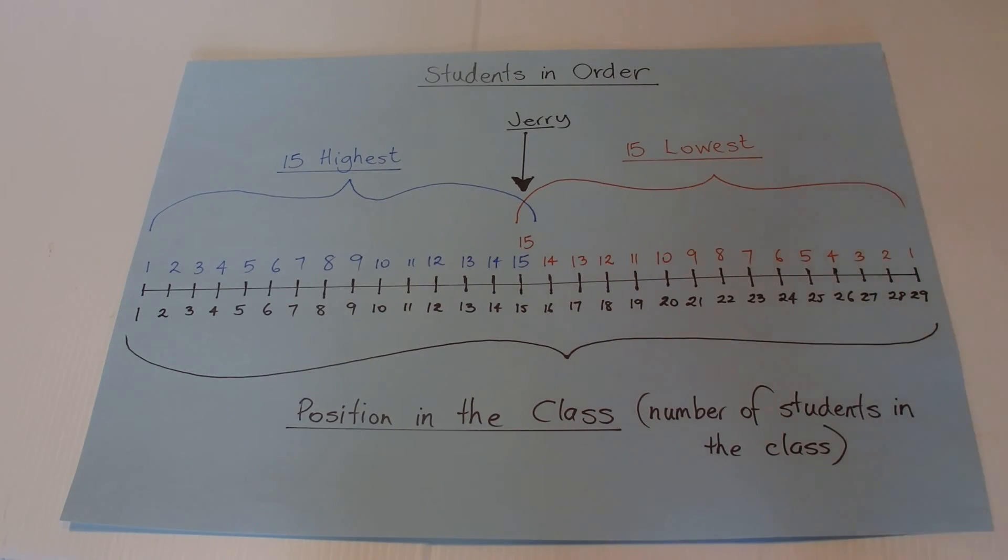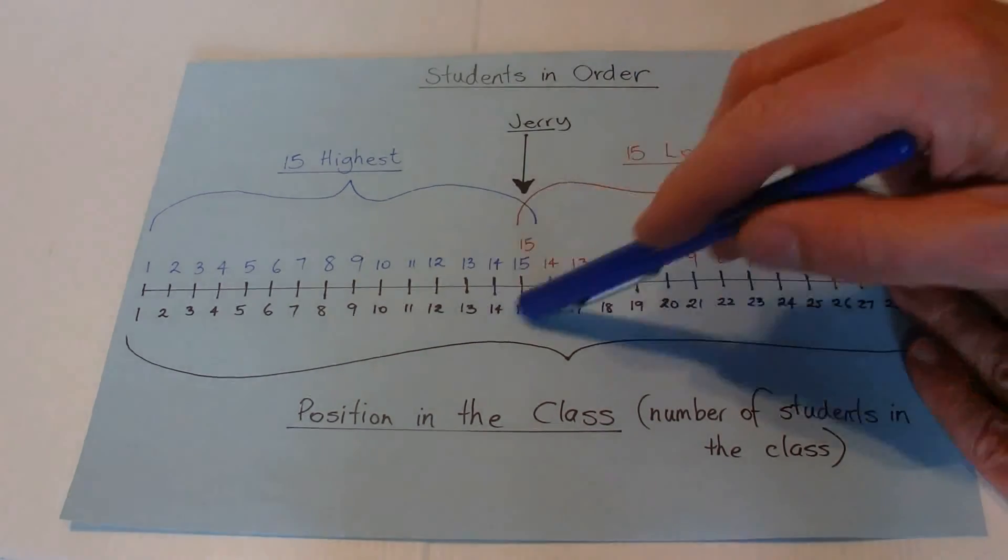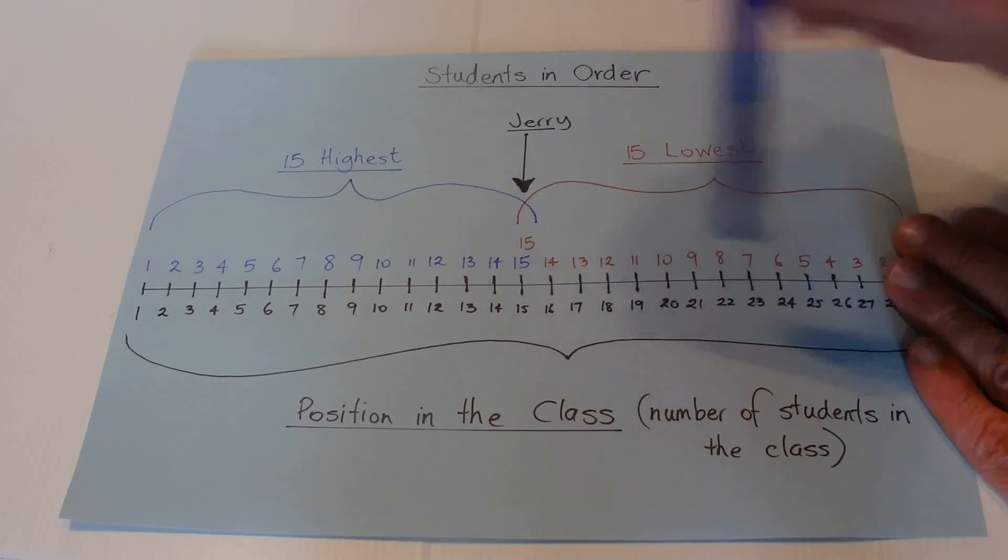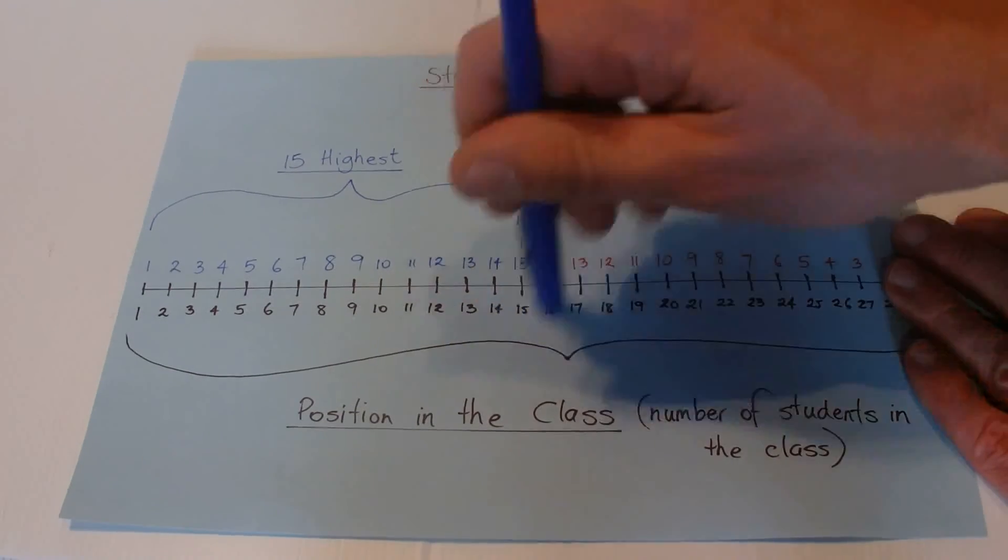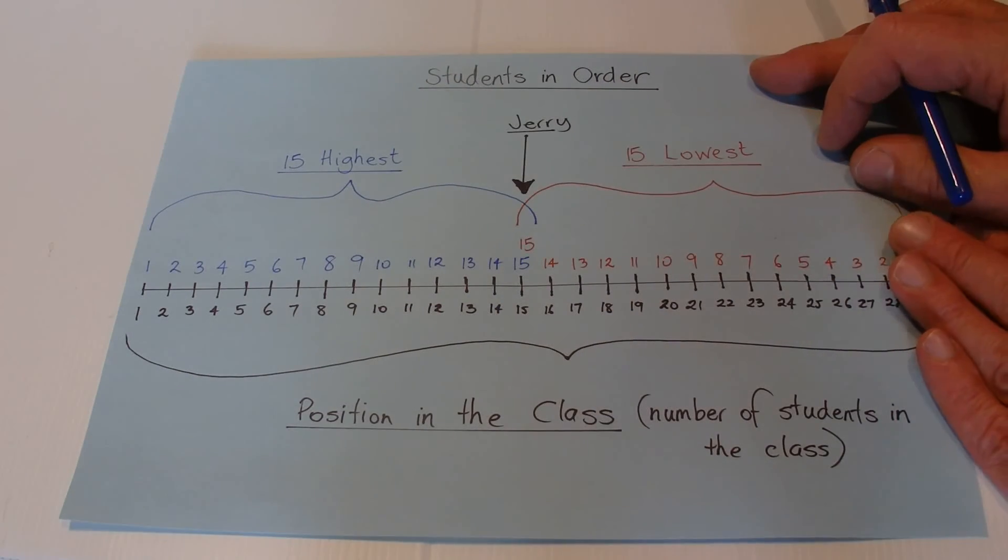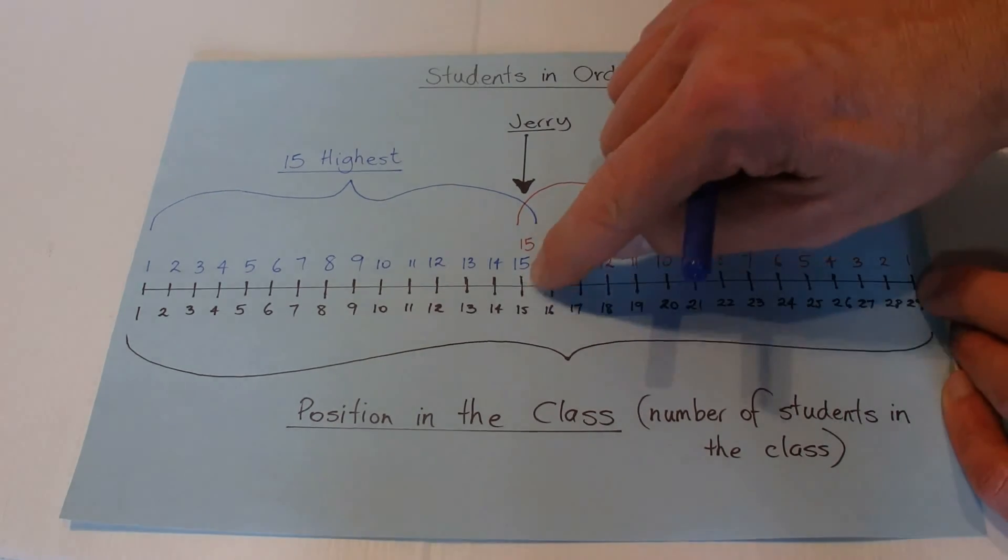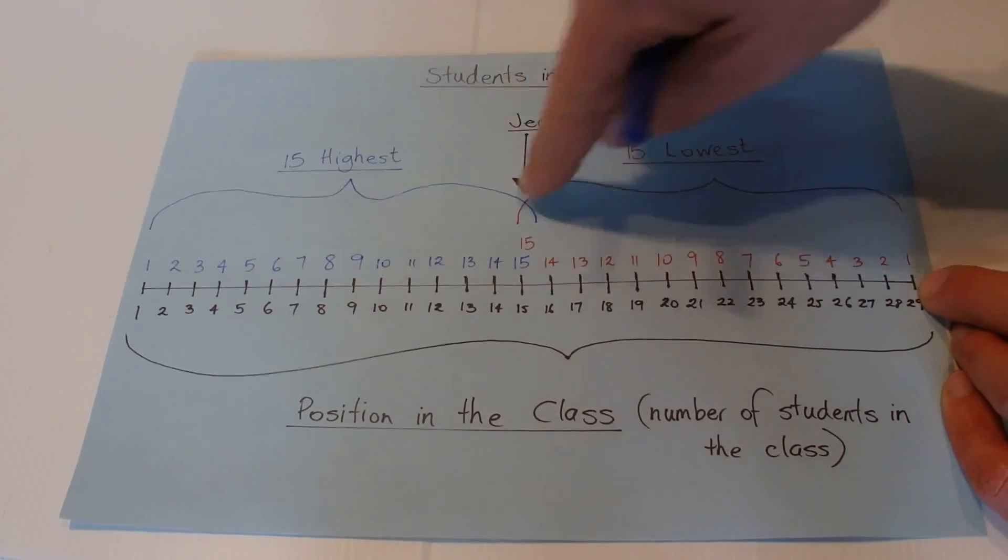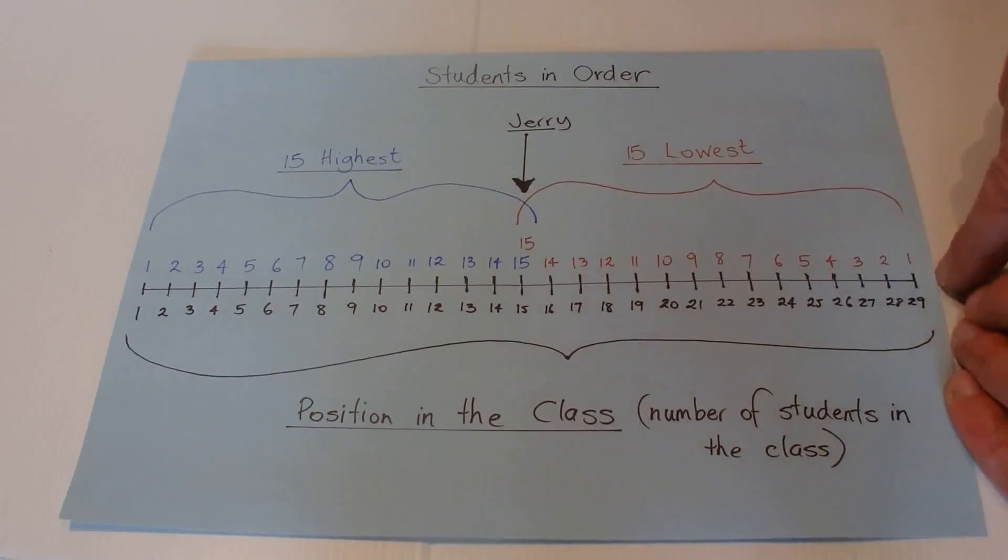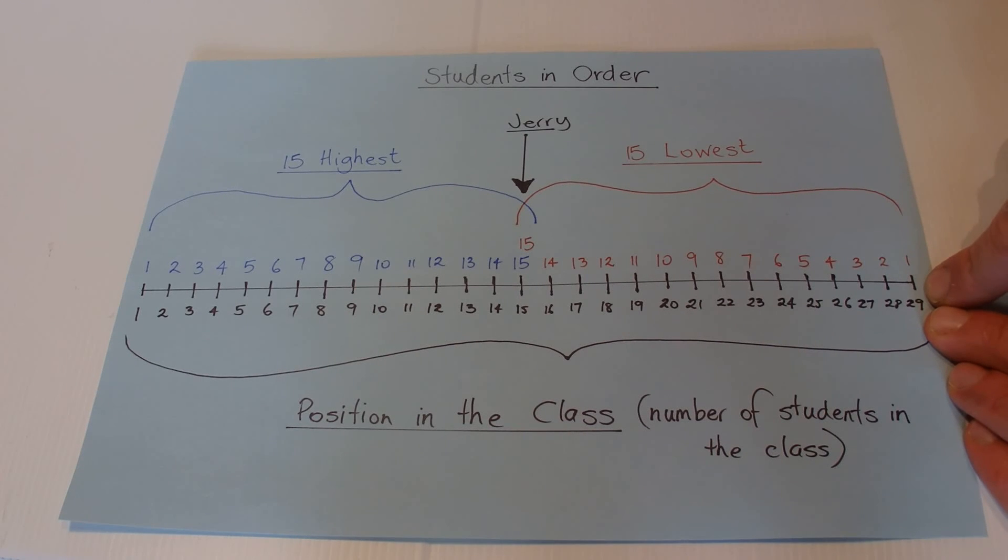Jerry's only one person and he can't be in two positions in the class. He's got to be at both the 15th highest and the 15th lowest. So there can't be 30 students in the class - there's got to be one less than 30, which is 29.